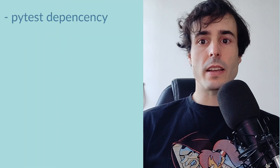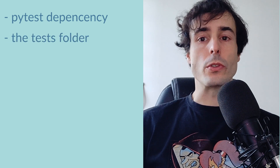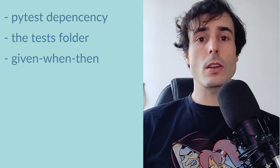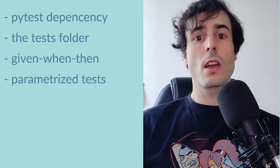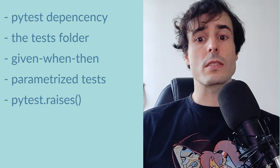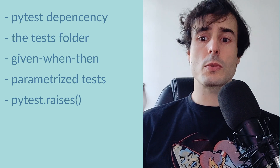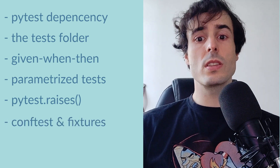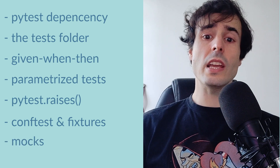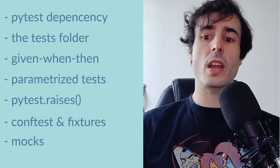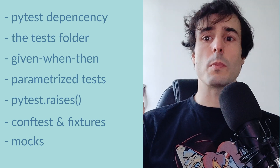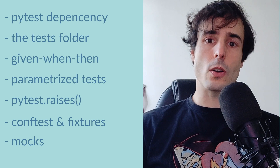Okay, let's recap. I've added the pytest dependency. I've created a separated folder, tests, where all my unit tests will be located. I've written my unit tests using the given-when-then method. When I have tests where I want to use multiple inputs, I've used parameterized tests. I've used a context when I want to ensure an exception is raised. I've created a conf test with fixtures, which contains the setup of my tests and the teardown operations. And finally, I've used the mocks to simulate the behavior of an unwanted method. That's all for this video. I hope you like it, so please click on the thumbs up and subscribe to my channel. See you in the next video. Bye.